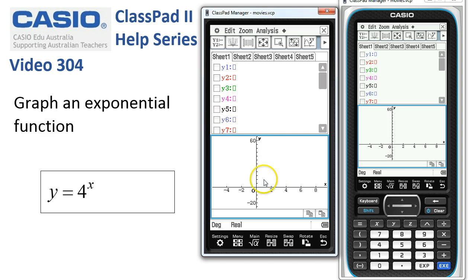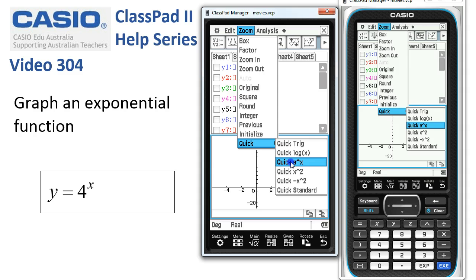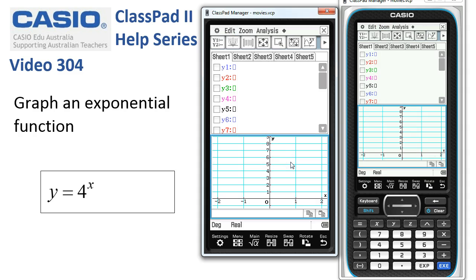By tapping into the downstairs window, upstairs I can see edit, zoom, analysis, and under zoom quick there's quick exponential scale, so we'll choose that one.